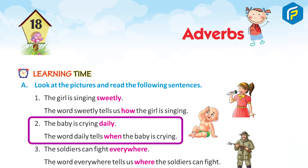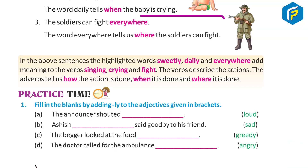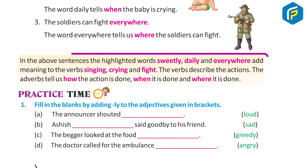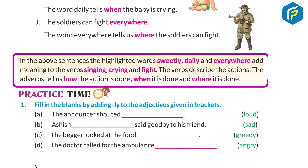2. The baby is crying daily. The word daily tells when the baby is crying. 3. The soldiers can fight everywhere. The word everywhere tells us where the soldiers can fight. In the above sentences, the highlighted words sweetly, daily and everywhere add meaning to the verbs singing, crying and fight.